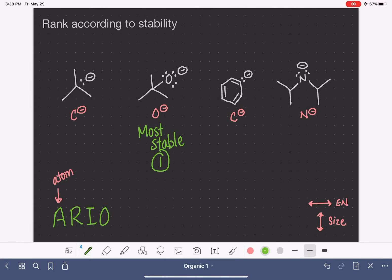And the nitrogen is the next most stable. So that means it is number two. Of the remaining two molecules, they both have a carbon atom with a negative formal charge. We cannot distinguish them in terms of stability using the A in ARIO. So that means we have to move on to the next letter to rank these two molecules. And the next letter, R, stands for resonance.